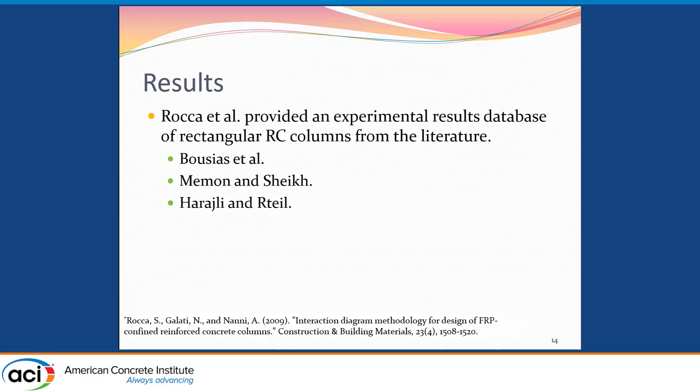Moving on to the results section. Unfortunately, we were unable to locate in the literature specimens that were tested for rectangular columns specifically with wraps spaced out. So we were not able to compare directly to that. However, we were able to find specimens that were with continuous wraps. We took these, compared them to the fully confined effect, and also conducted a parametric study by varying the parameters to observe the behavior changes. These specimens were compiled in the database by Rocca et al. And we are going to look at specimens by Bosias, Mamoun and Sheikh, and Durandet.